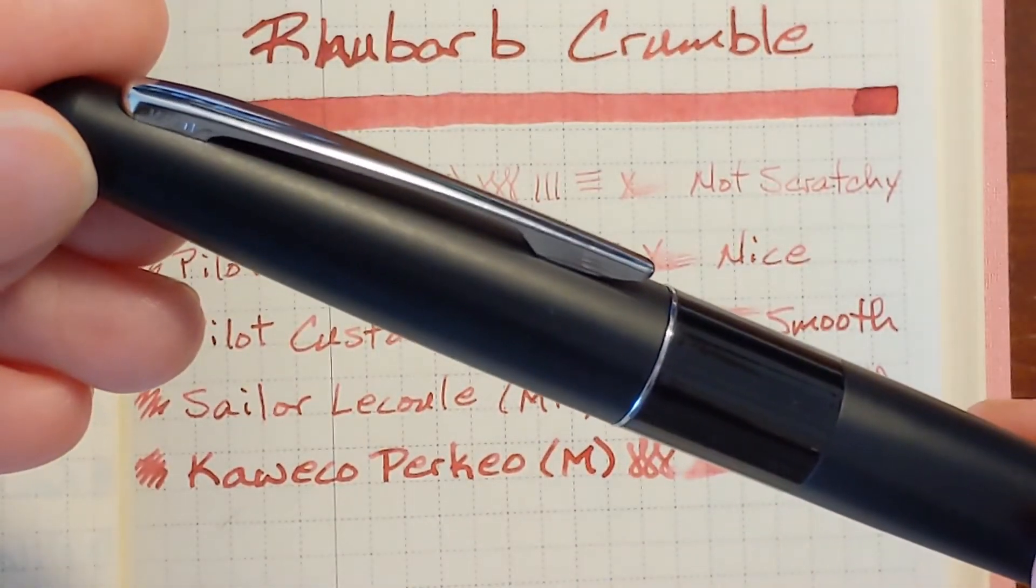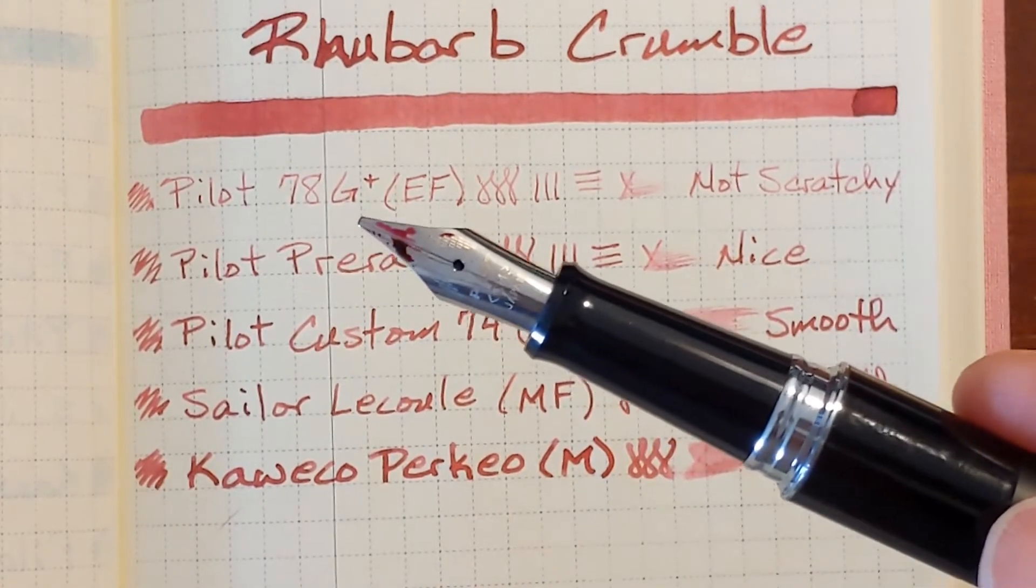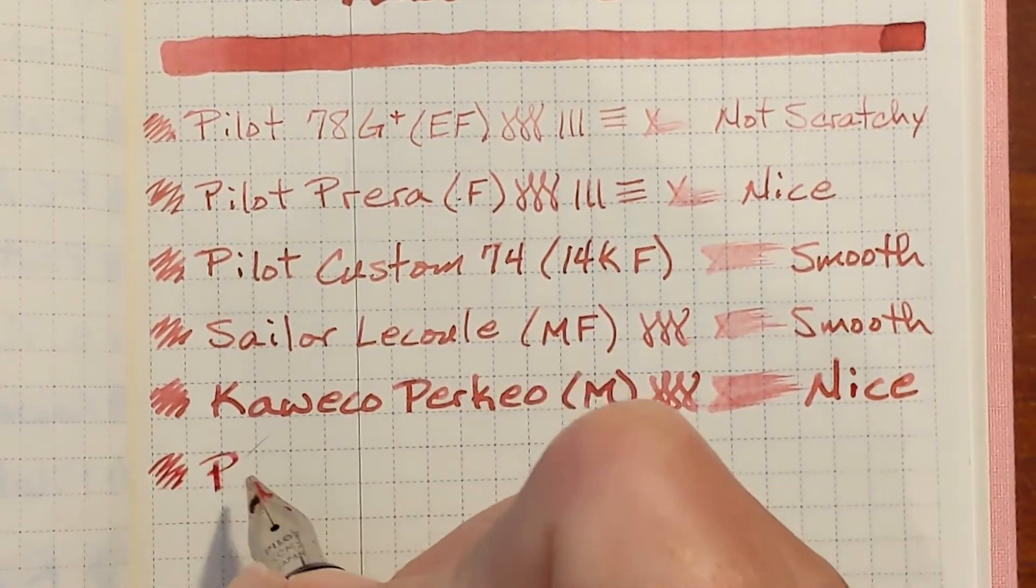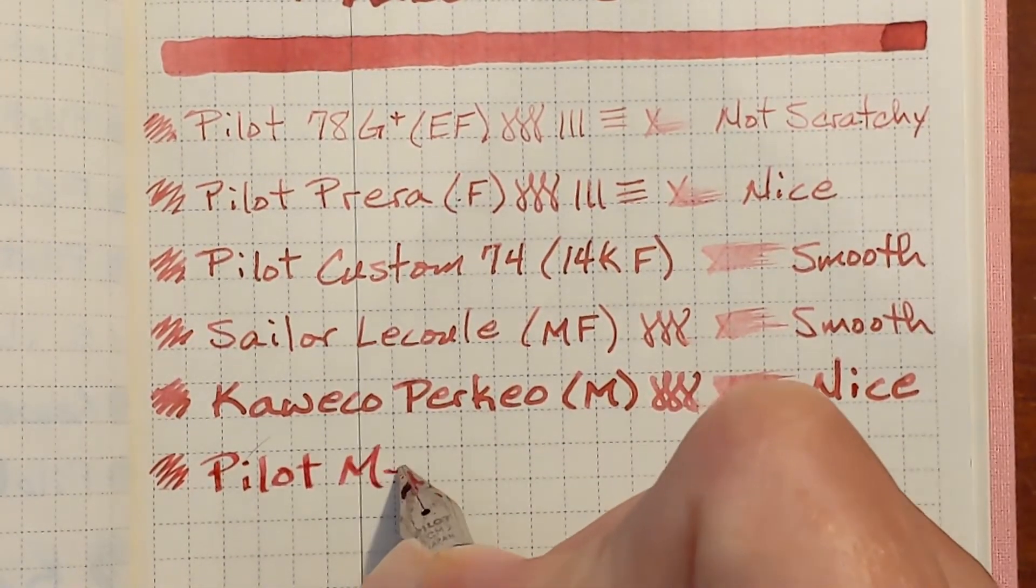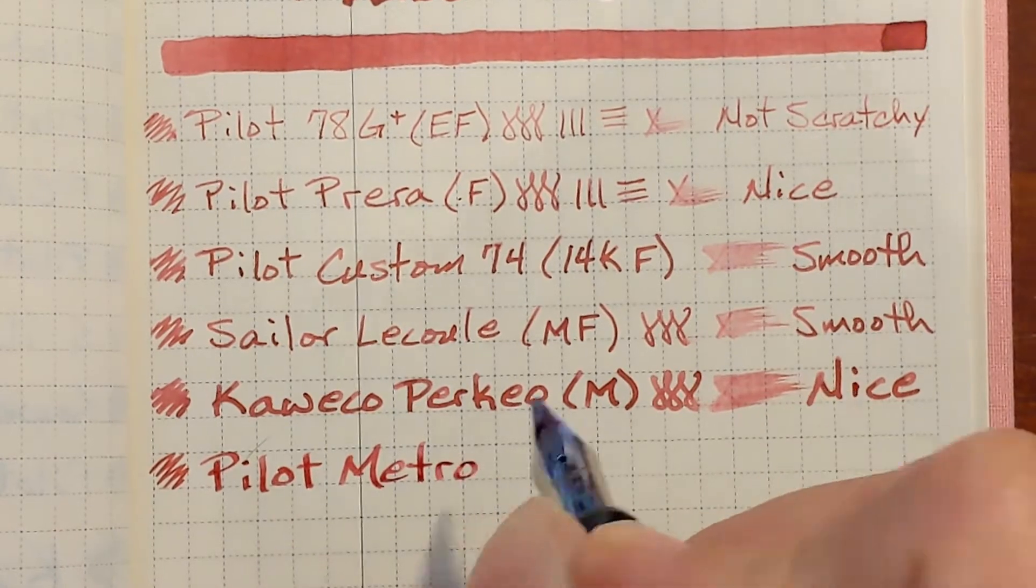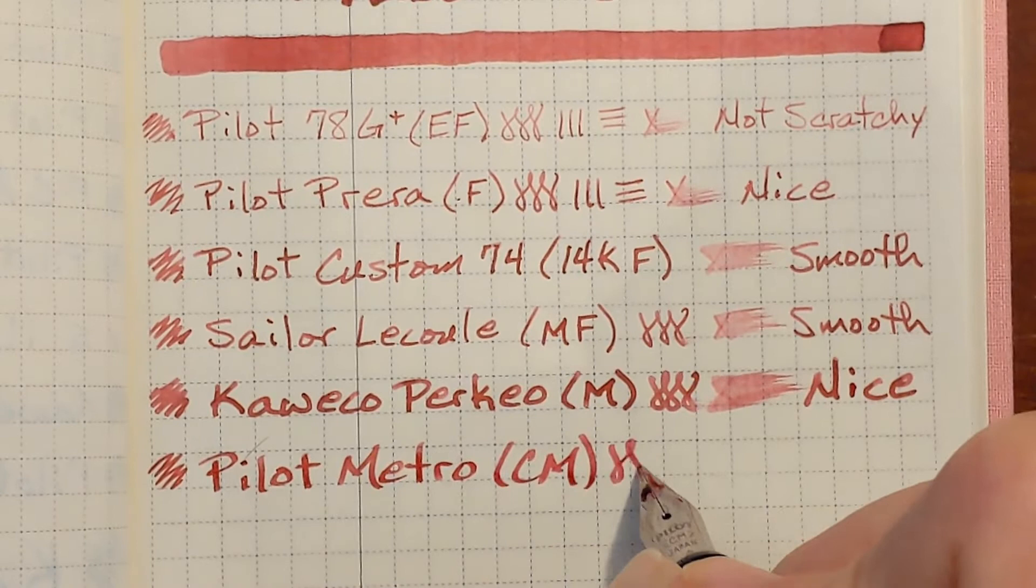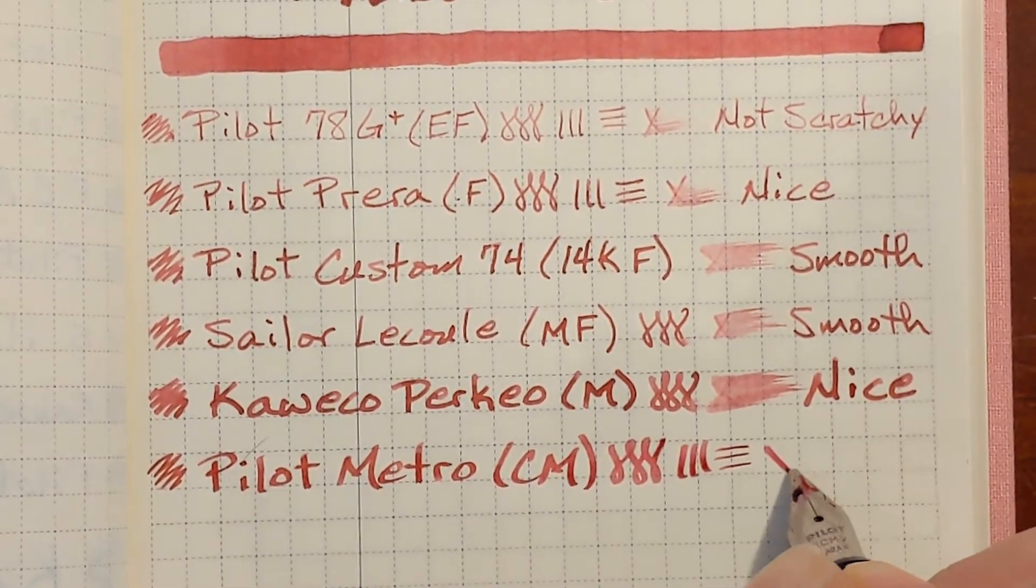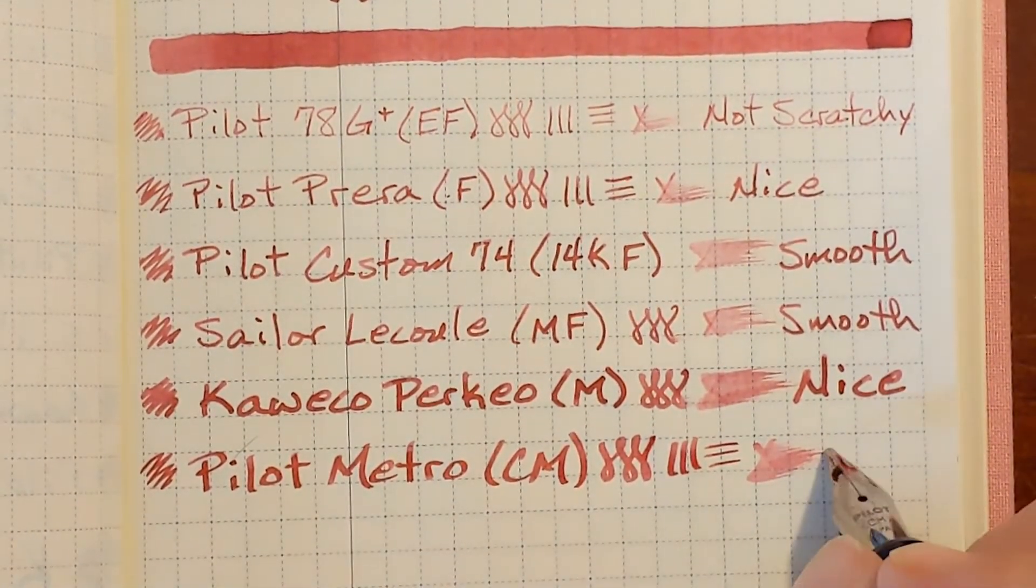Next is a Pilot Metropolitan with a cursive medium steel nib. This nib is also hit and miss. Sometimes it feels too dry because it is a drier writing nib. But it felt pretty smooth.